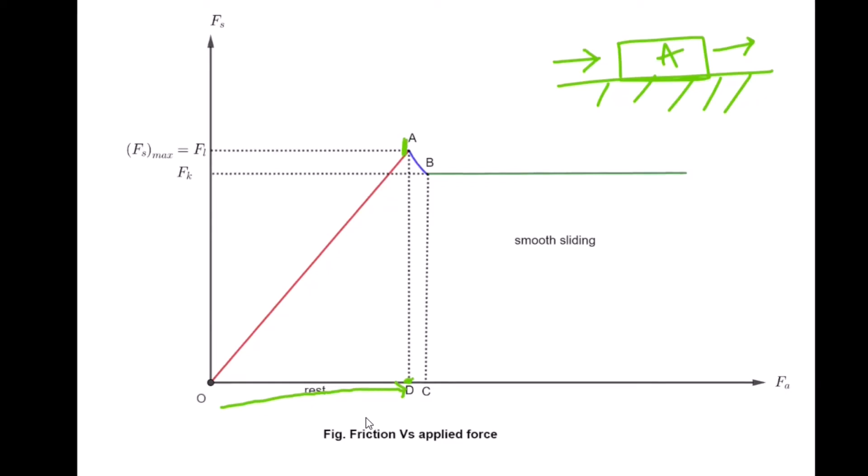The frictional force when the body is at rest is the static frictional force. To make the body move, the applied force must be equal to the maximum value of the static frictional force — that is called the limiting friction. At that point, the body just begins to slide.